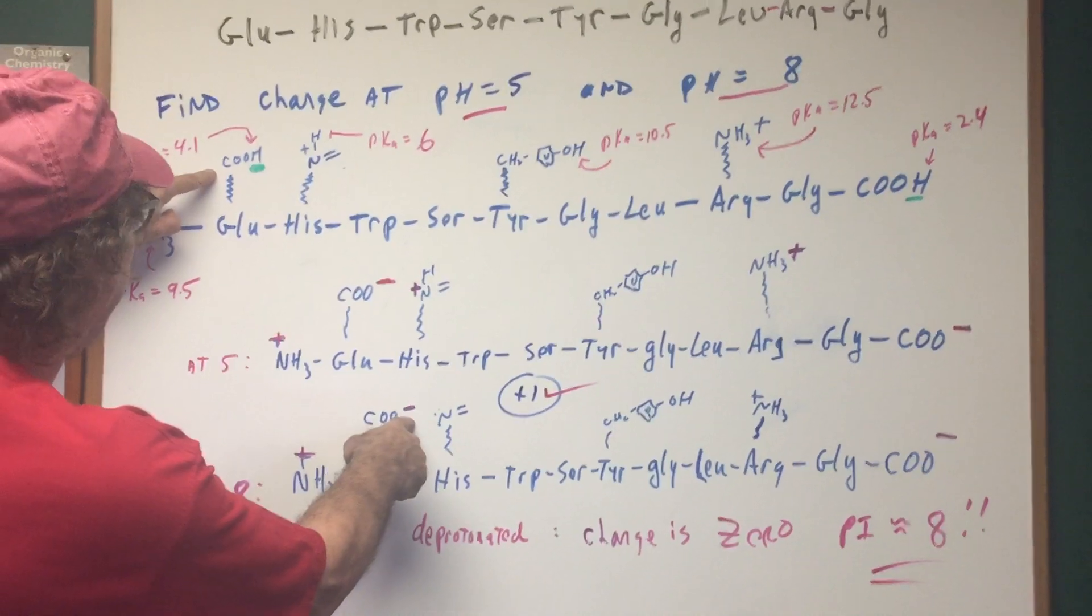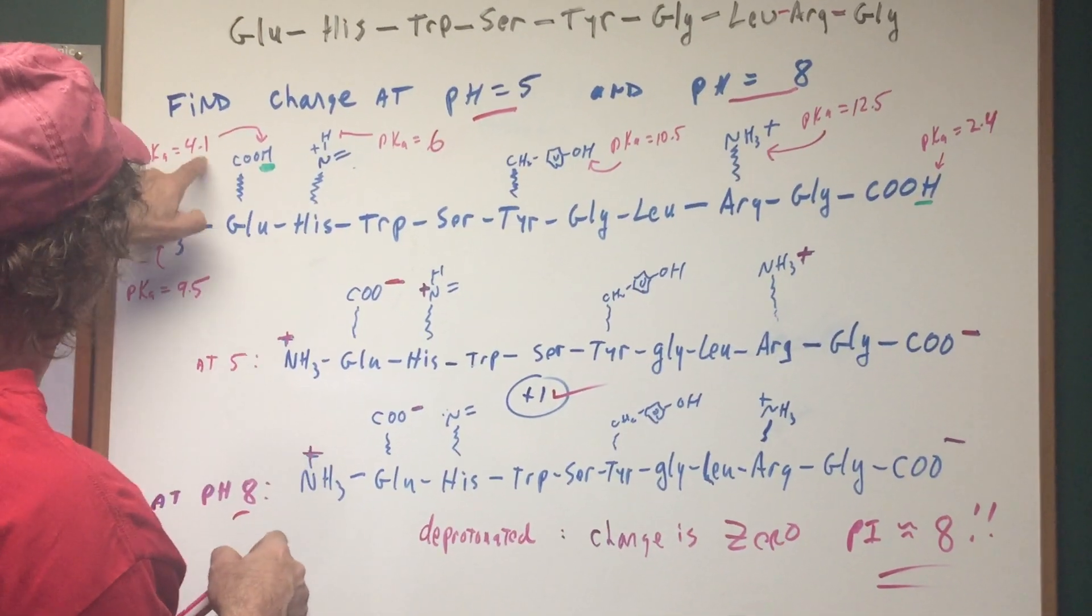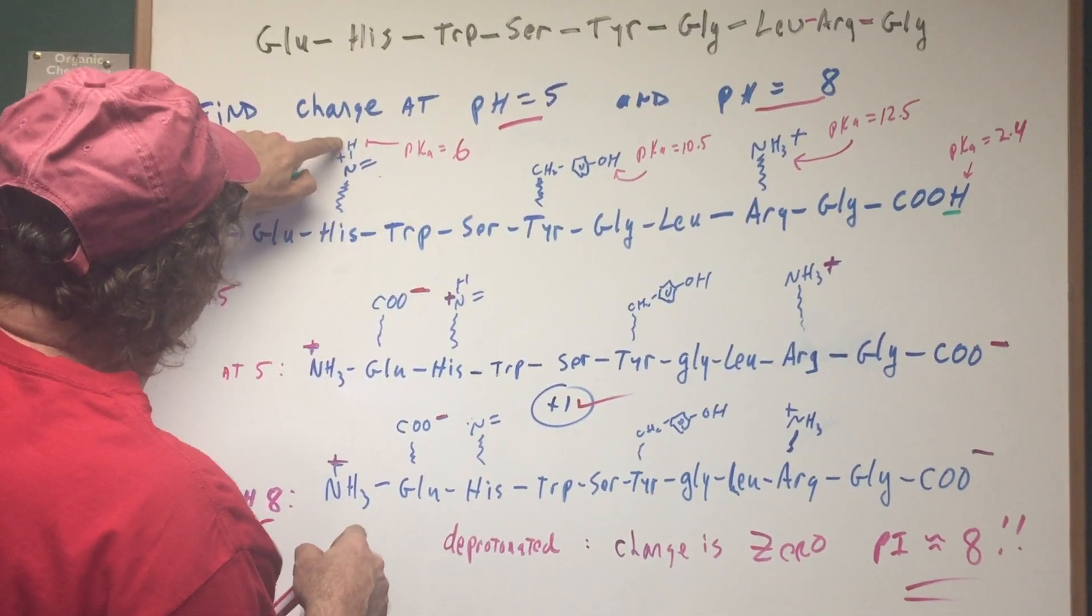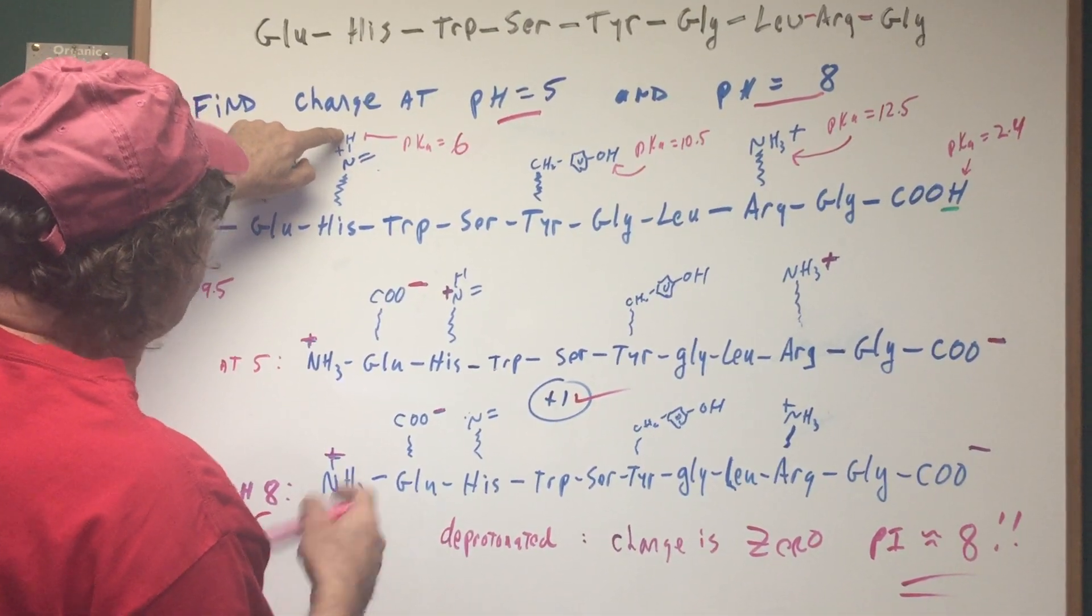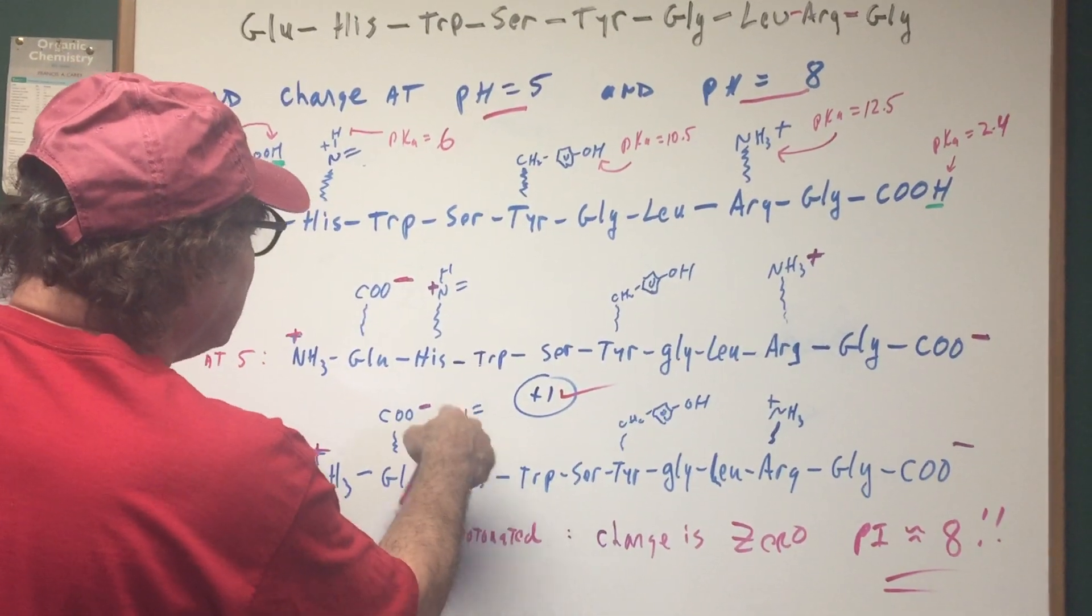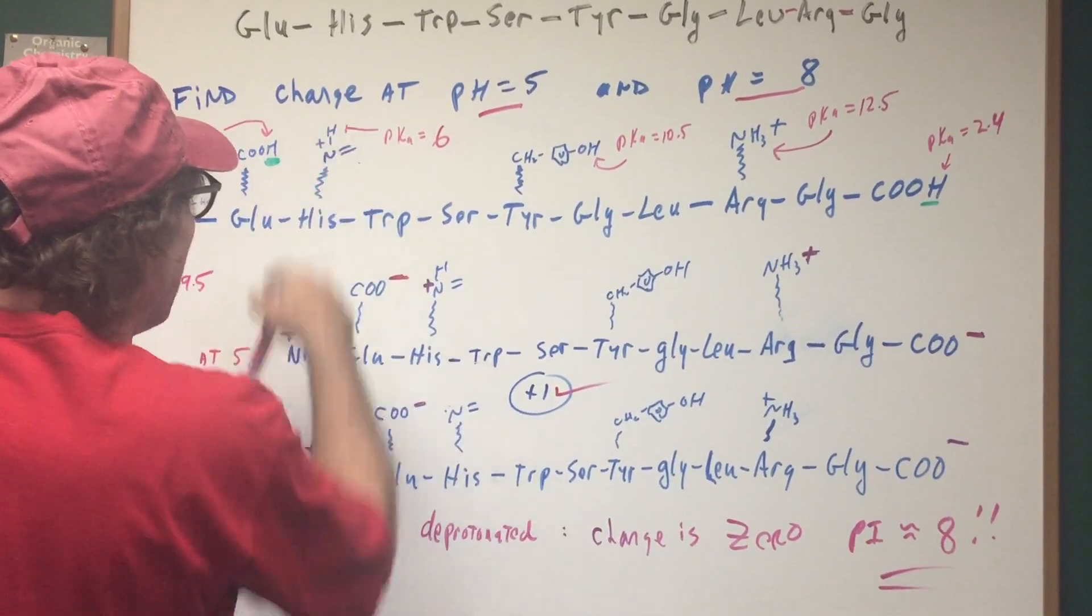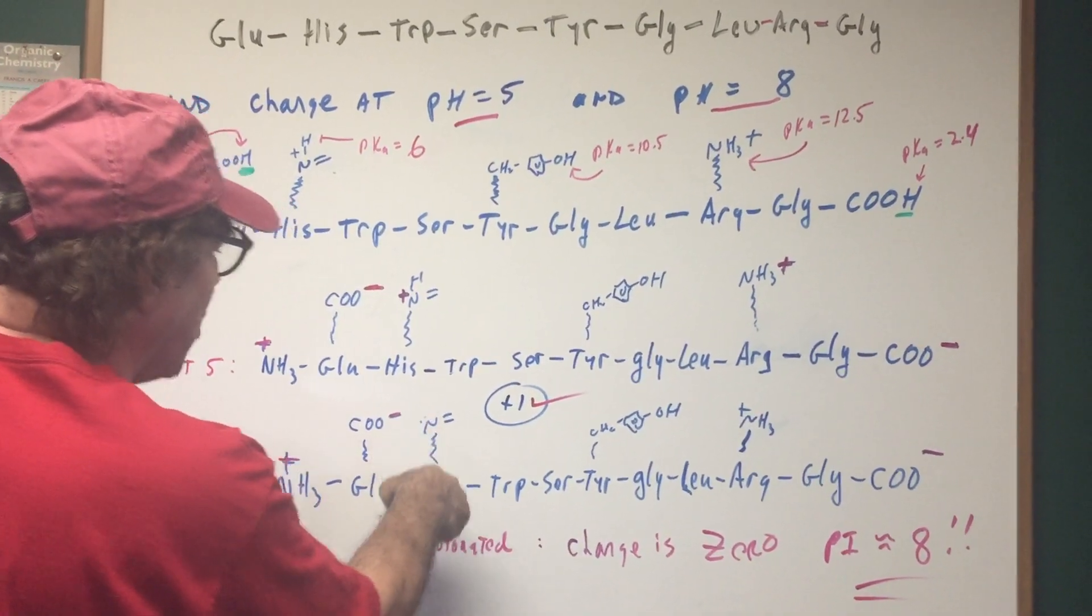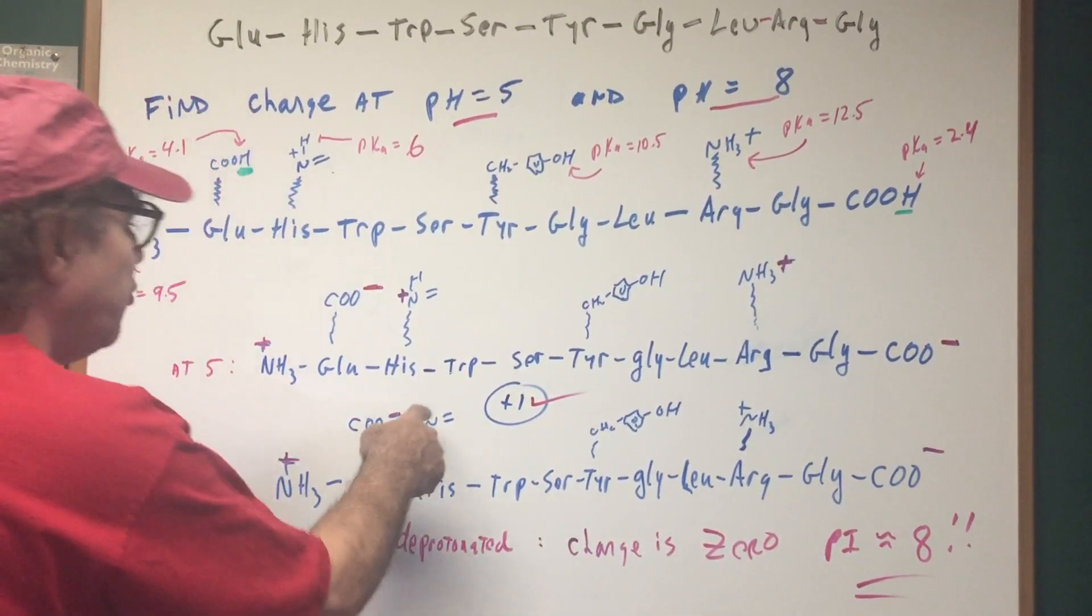And if you look here, we put a minus sign on it that left at 4.1. PKA of six. So obviously if this deprotonated 50% left at six at eight, that's pretty much gone. So that's neutral now, right? If you take away this plus charge, you have the side chain of histidine. The imidazole ring now has a neutral charge.